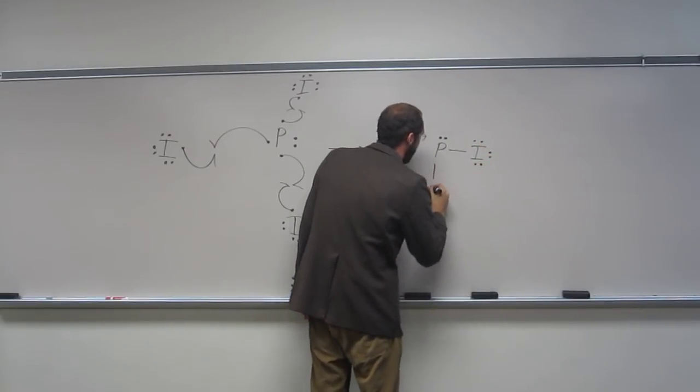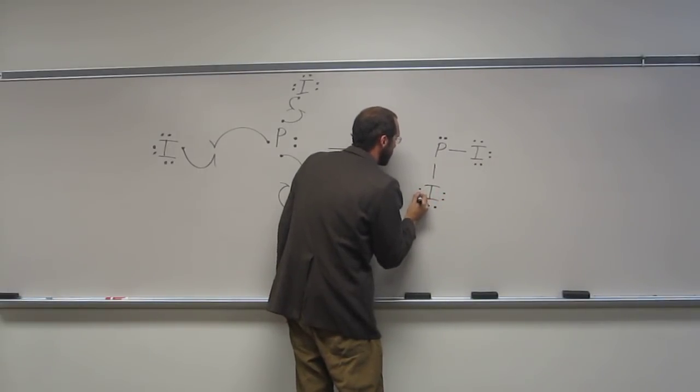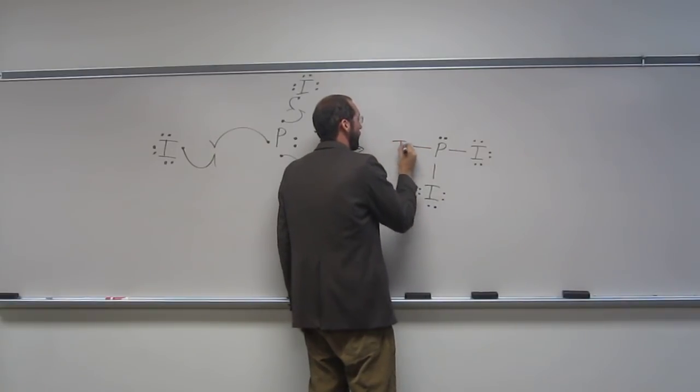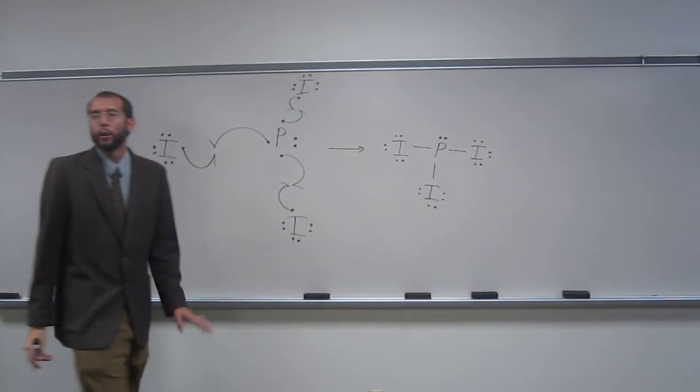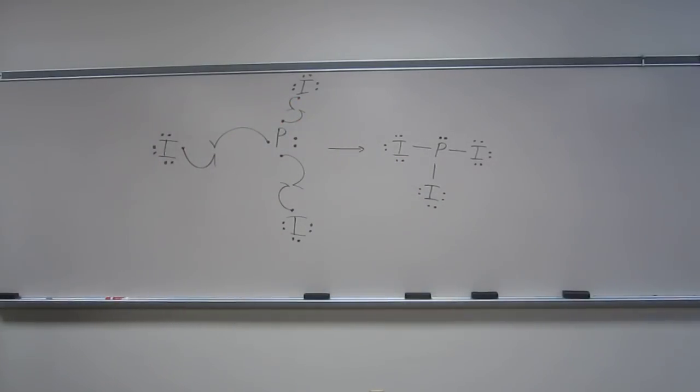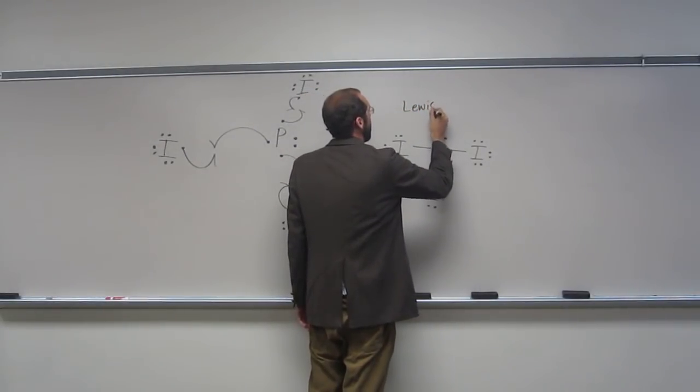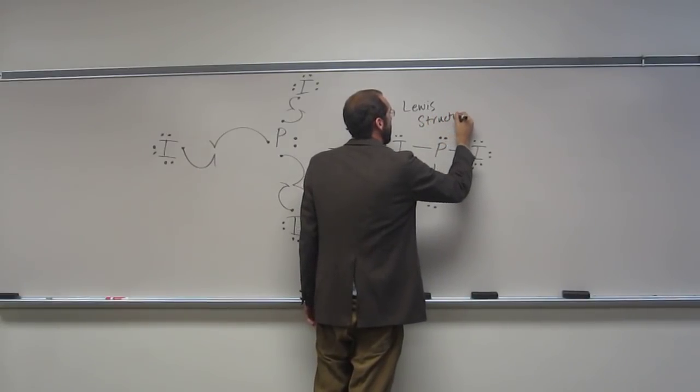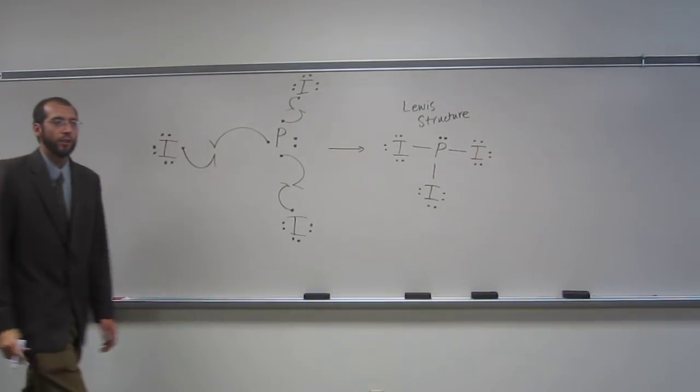And it's best to keep your valence electrons there. Like that. So hopefully you guys drew a picture similar to that. So this is called a Lewis structure. This is the Lewis structure of the molecule phosphorus triiodide.